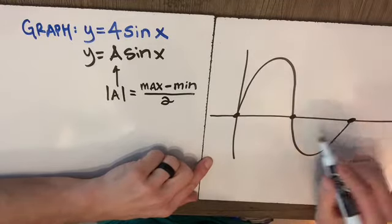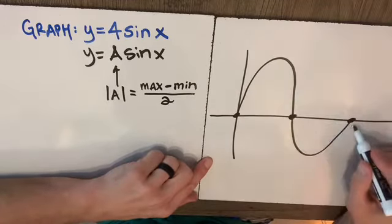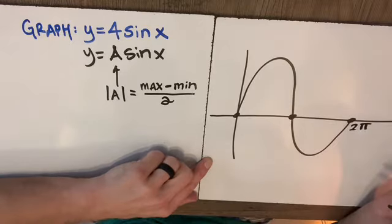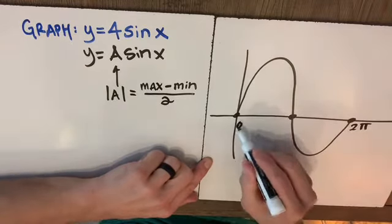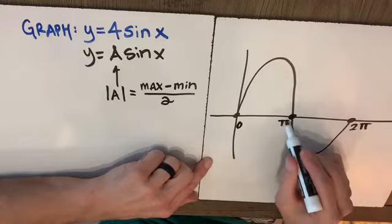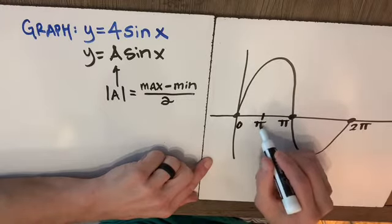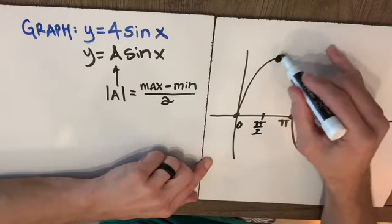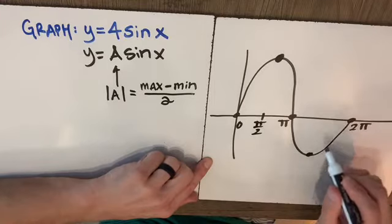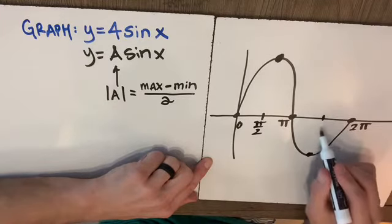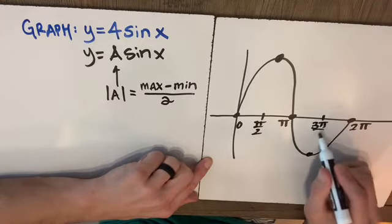We know that if we're talking about the parent function we finish this whole dance at 2π and we're starting at 0. So half of that is π and then half that will be π/2 for our maximum and the minimum will be found at halfway between π and 2π which will be 3π/2.